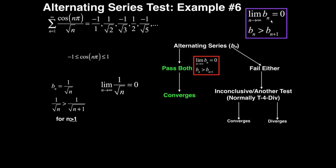We need to know what our b sub n is in order to apply this test. Since cosine can only range between negative 1 and 1, the b sub n is basically everything minus the alternating term — we take out the cosine — so b sub n is just 1 over square root of n.